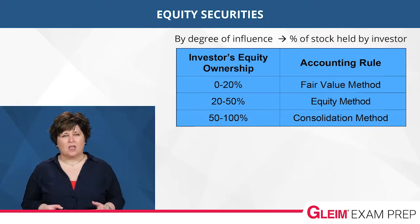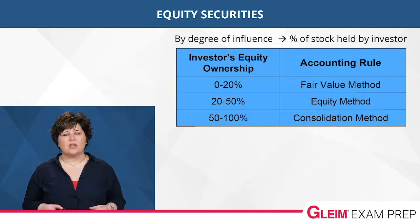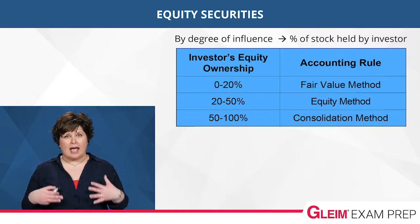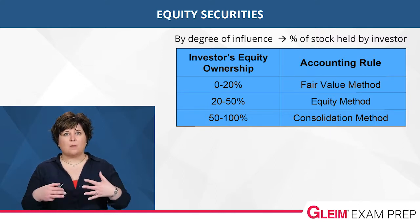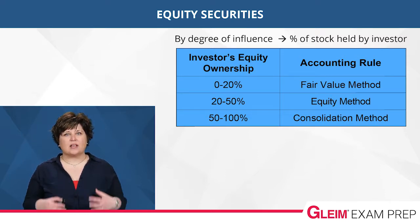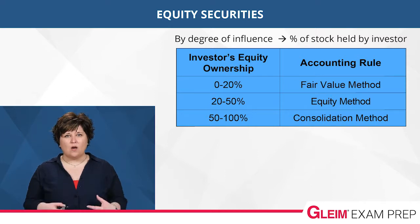We're going to start by covering all the basics for equity securities. The first thing you want to know are the accounting rules for how to record the equity securities — that's one of the really tricky parts. How you account for the investment in equity securities varies based on the degree of influence that you have over the company in which you invest. So if company A purchases stock of company B, the accounting rule we use depends on the percentage of the stock we hold of company B.